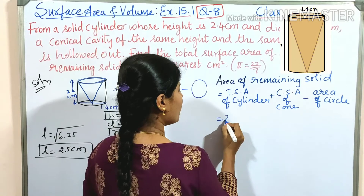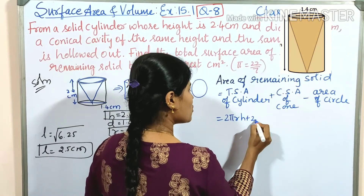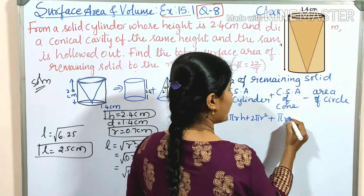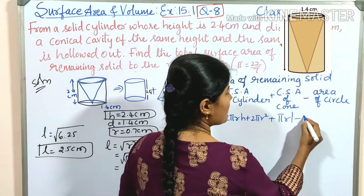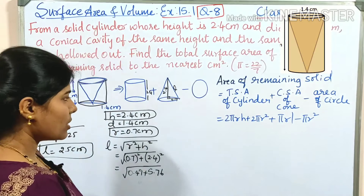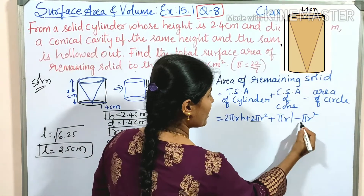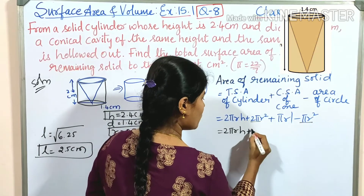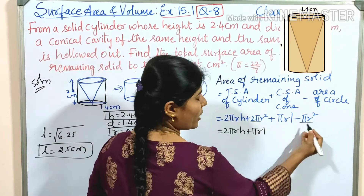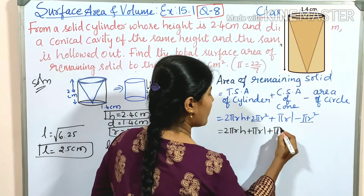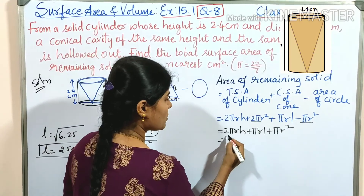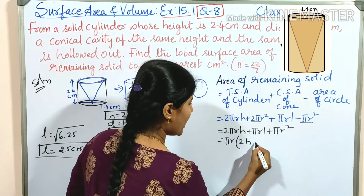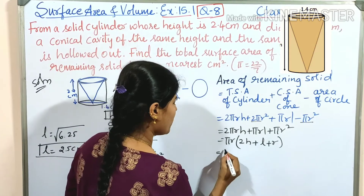TSA of cylinder is 2πrh + 2πr². Adding CSA of cone gives + πrl, then subtracting πr². So 2πr² − πr² gives +πr². The full expression simplifies to: 2πrh + πrl + πr², and taking πr as common: πr(2h + l + r).